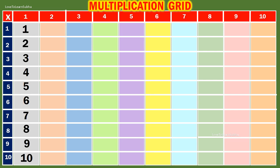Table of 2. 2 1s are 2. 2 2s are 4. 2 3s are 6. 2 4s are 8. 2 5s are 10.